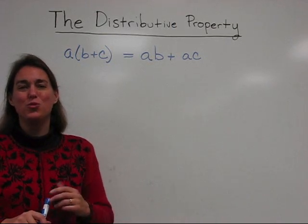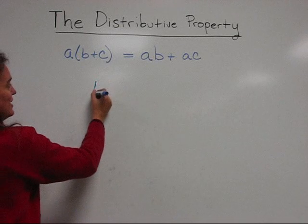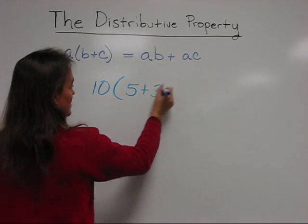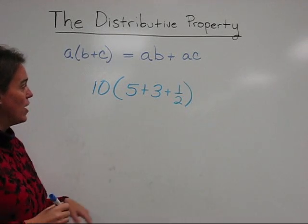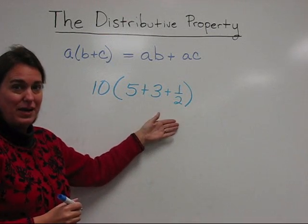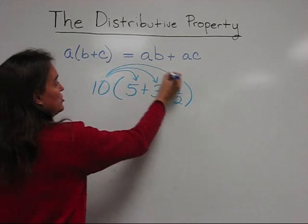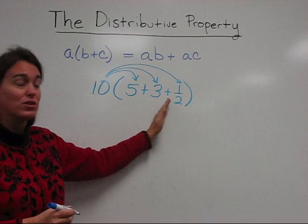Before closing, let's do one more example of the distributive property. Let's say you have 10 times 5 plus 3 plus 1 half. And you can use the order of operations and add 5 and 3 and 1 half and then multiply that by 10. Or the distributive property tells us we can distribute or hand out the 10 to each of these things on the inside first.